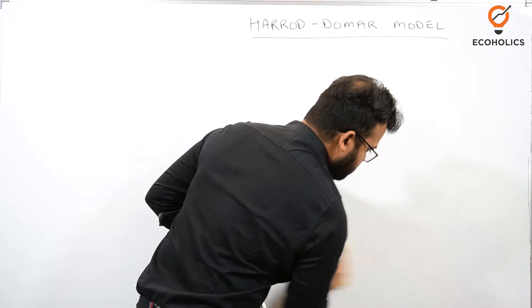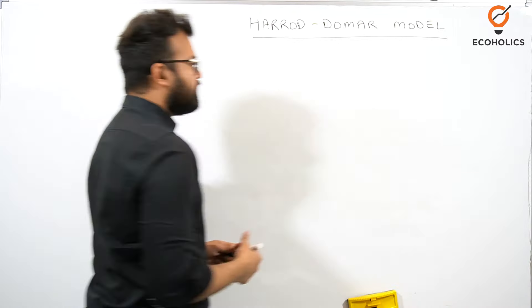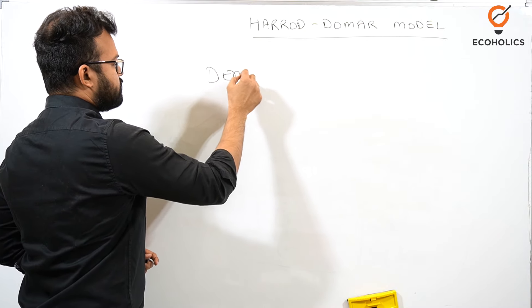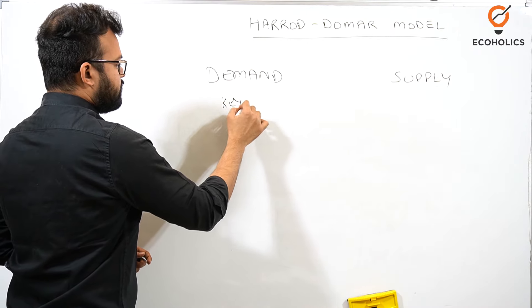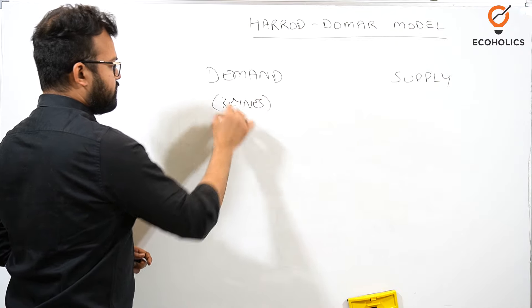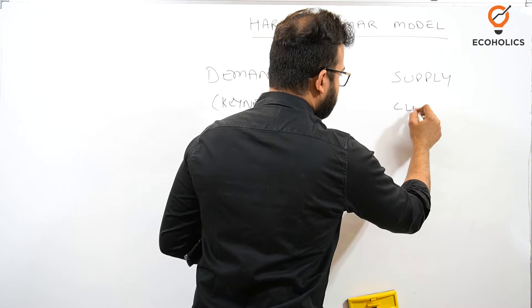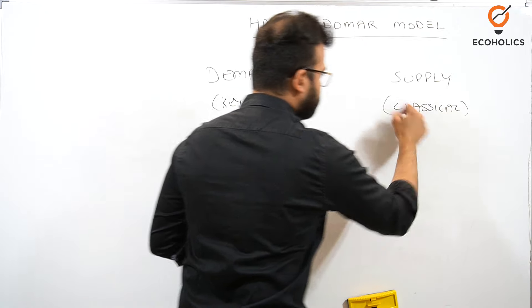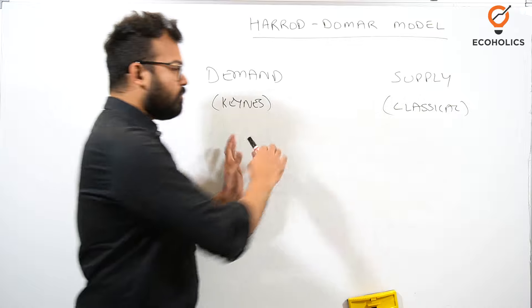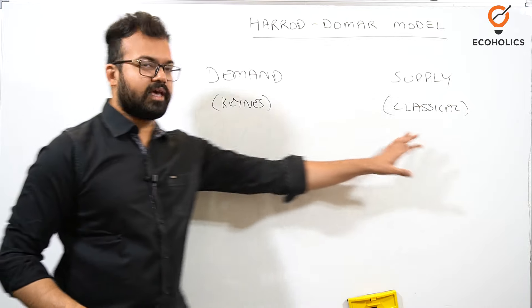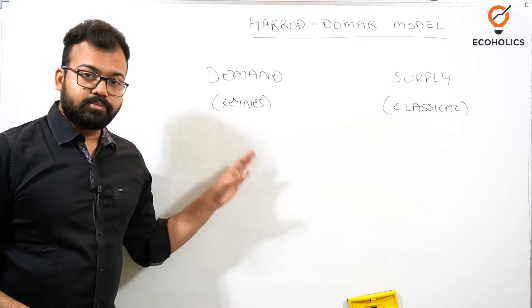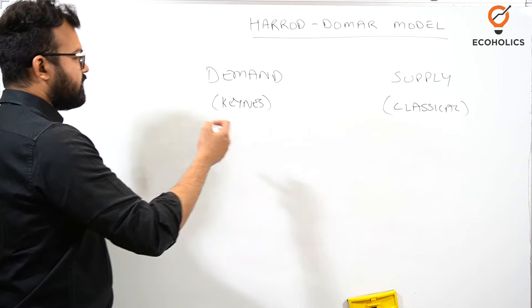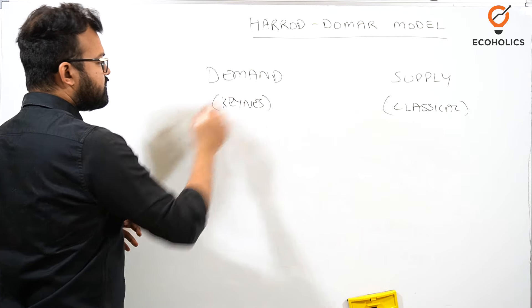When we talk about demand and supply, two schools of thought come to mind. On the demand side, Keynes comes into the picture, and on the supply side, the classical economists come to mind. Harrod and Domar took both sides — the demand side and the supply side. On the demand side they explained investment and marginal propensity to consume. So the Harrod-Domar model can be said to be an extension of the Keynesian model.